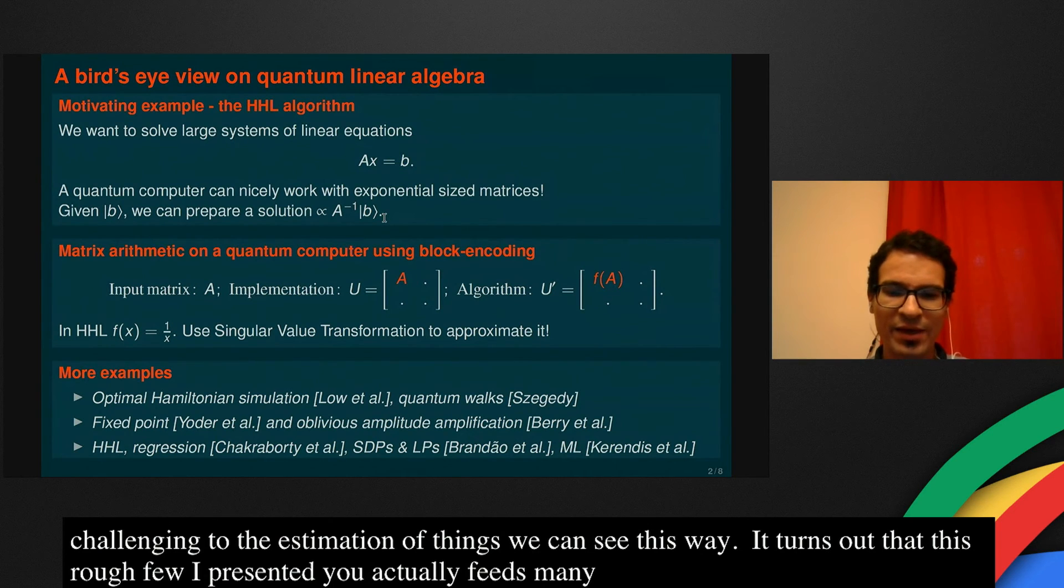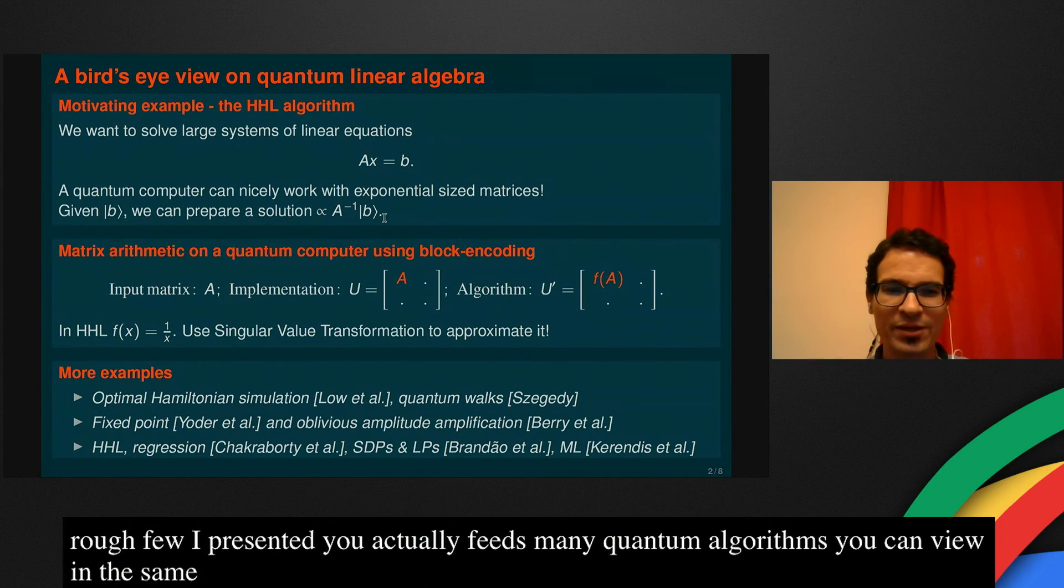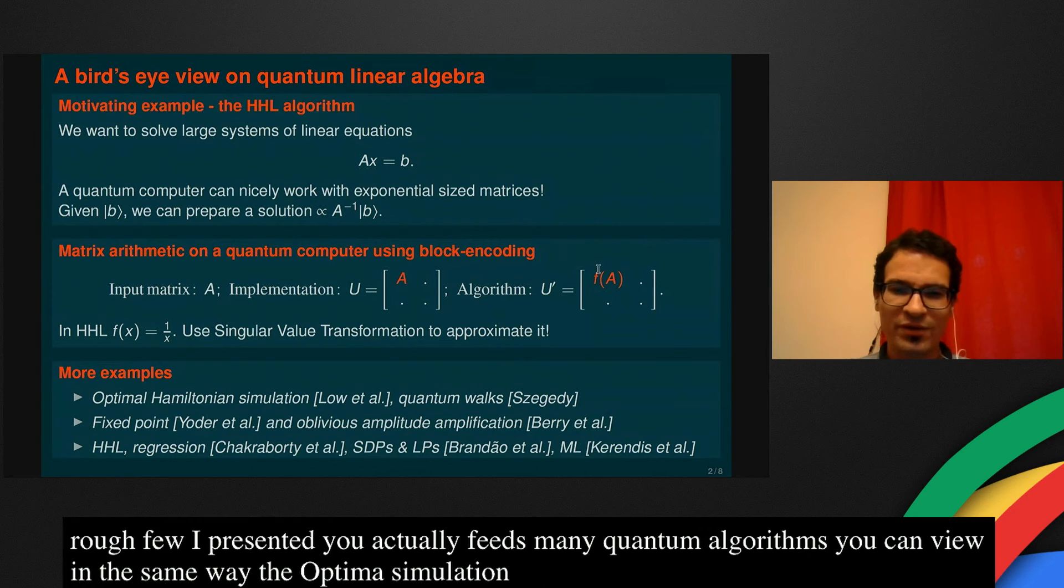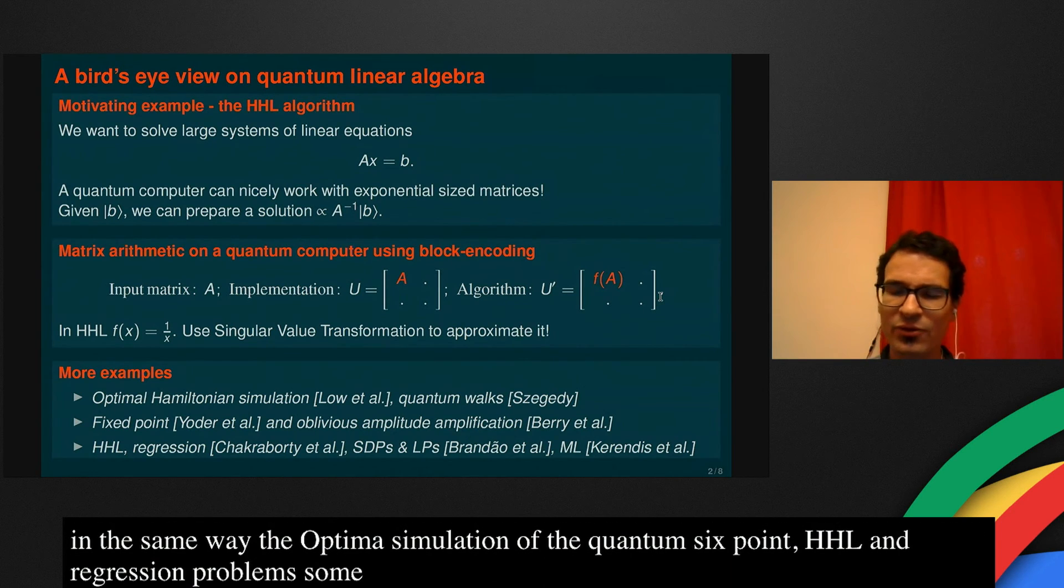It turns out that this rough view that I just presented actually fits many quantum algorithms. You can view in the same way the optimal Hamiltonian simulation algorithm of Law and Chuang, quantum walks, fixed point, oblivious amplification, HHL and variants of it like regression problems, semi-definite program solving, linear program solving, and all sorts of other machine learning problems.